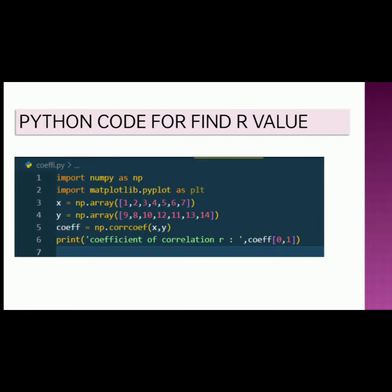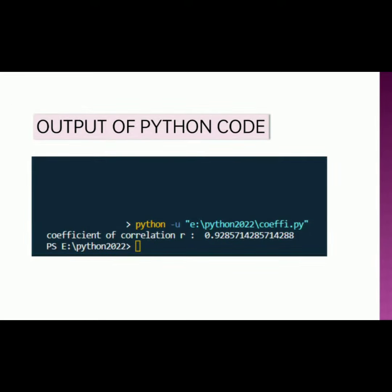And this is the code for finding the R value. After executing this program, we have got the value of coefficient of correlation R equal to 0.9285.